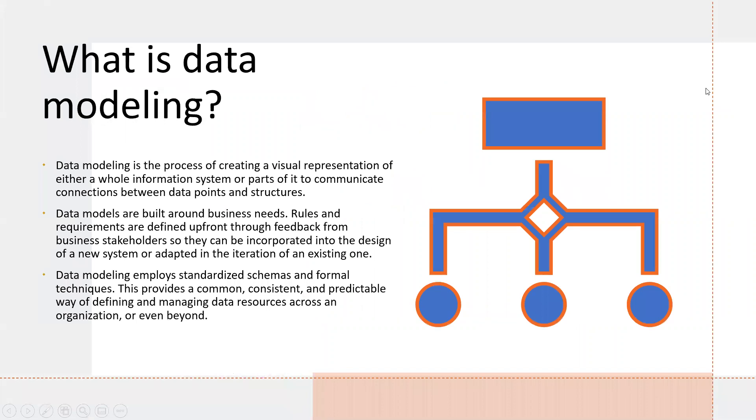What is data modeling? Data modeling is the process of organizing and mapping data using simplified diagrams, symbols, and text to represent data associations and flow. Engineers use these models to develop new software and update legacy software. Data modeling also ensures the consistency and quality of data.